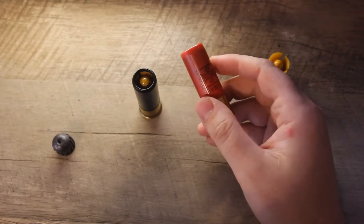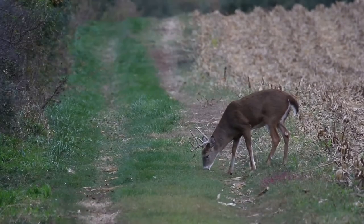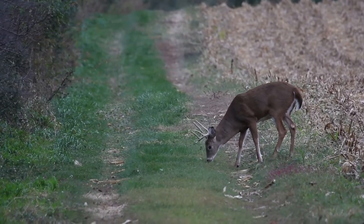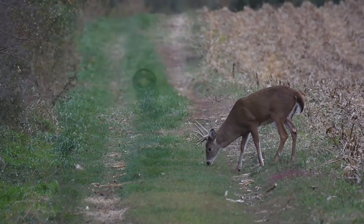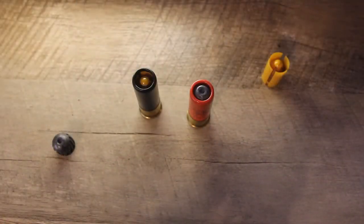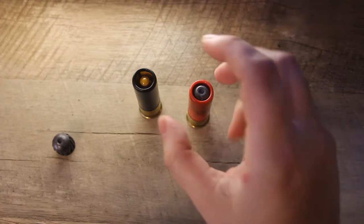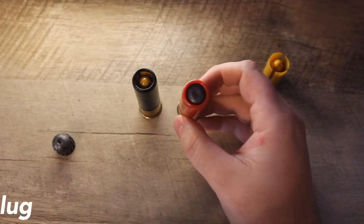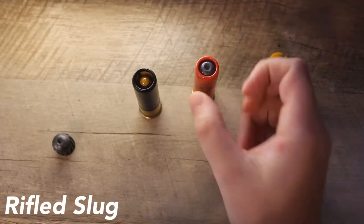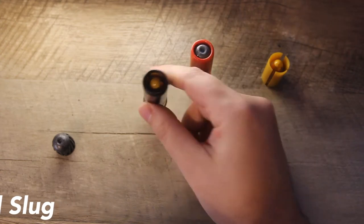Slugs are generally used for medium-sized game, especially white-tailed deer and similar sized game, and there's essentially two main types of slugs on the market. You have what many people refer to as a rifled slug, and then you have some of these newer types of slugs, these sabot rounds.